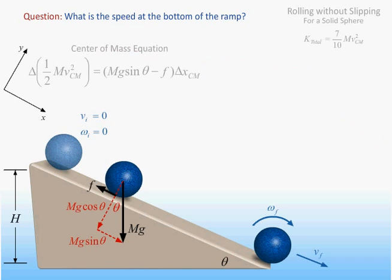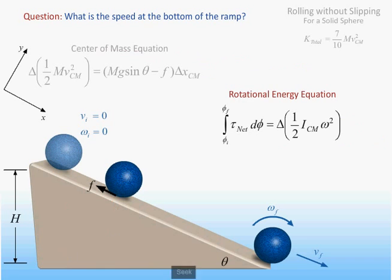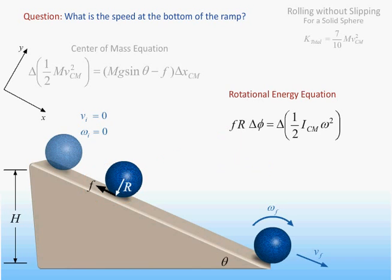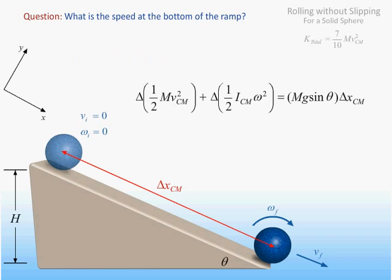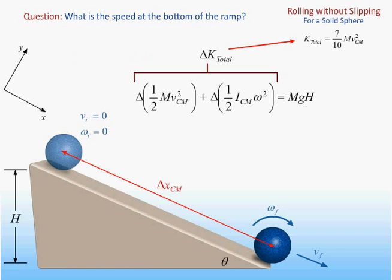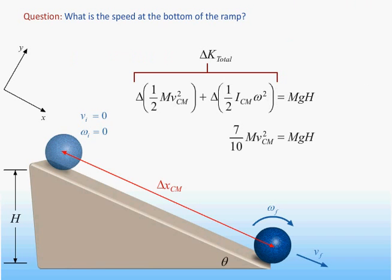We can determine the magnitude of the frictional force from a consideration of the rotational energy equation derived earlier: namely, that the net torque times the angular displacement equals the change in rotational kinetic energy. The net torque is just equal to the product of the frictional force and the radius of the ball. The product of the radius and the angular displacement is just equal to the displacement of the center of mass. Combining this information with the center of mass equation, we obtain our final result: the change in kinetic energy of the center of mass plus the change in rotational kinetic energy relative to the center of mass equals the work done by the gravitational force. Using our result for the total kinetic energy of the rolling ball, we find that the velocity of the center of mass is proportional to the square root of the vertical distance the ball travels.